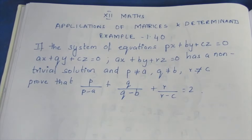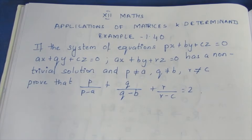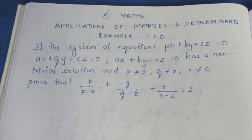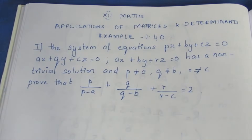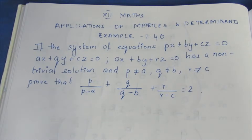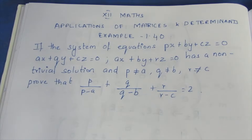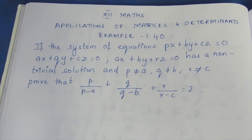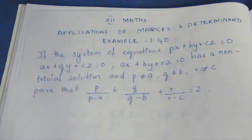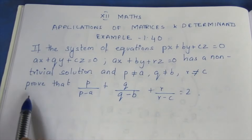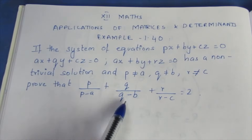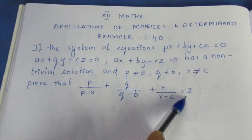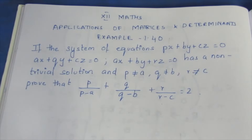Hello viewers, I am Ikely. In 12th grade, applications of matrices and determinants, example 1.40. The question is: if the system of equations Px + By + Cz = 0, Ax + Qy + Cz = 0, Ax + By + Rz = 0 has a non-trivial solution, and P is not equal to A, Q is not equal to B, R is not equal to C, prove that P/(P-A) + Q/(Q-B) + R/(R-C) = 2.